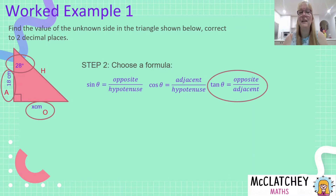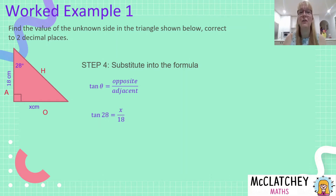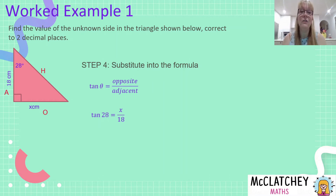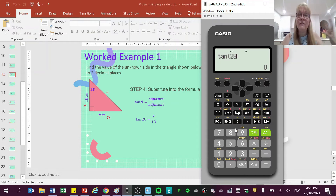Our next step is to write the tangent formula down and substitute into it. The opposite side is x and the adjacent side is 18. Remember to also substitute the angle — theta represents the given angle, which is 28 degrees. If we put tan 28 into our calculator, the calculator has memorized all the values for tangent. The tangent of 28 is a real number with many decimal places.